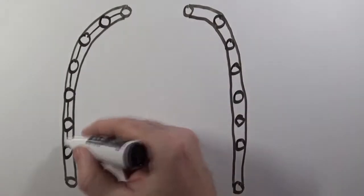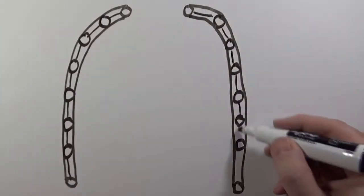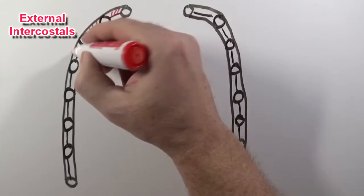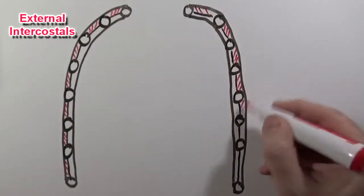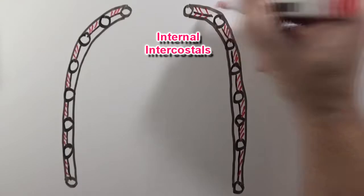These little lines here between the ribs represent the fascia that separates the internal and external intercostal muscles. The external intercostals and then the internal intercostals.